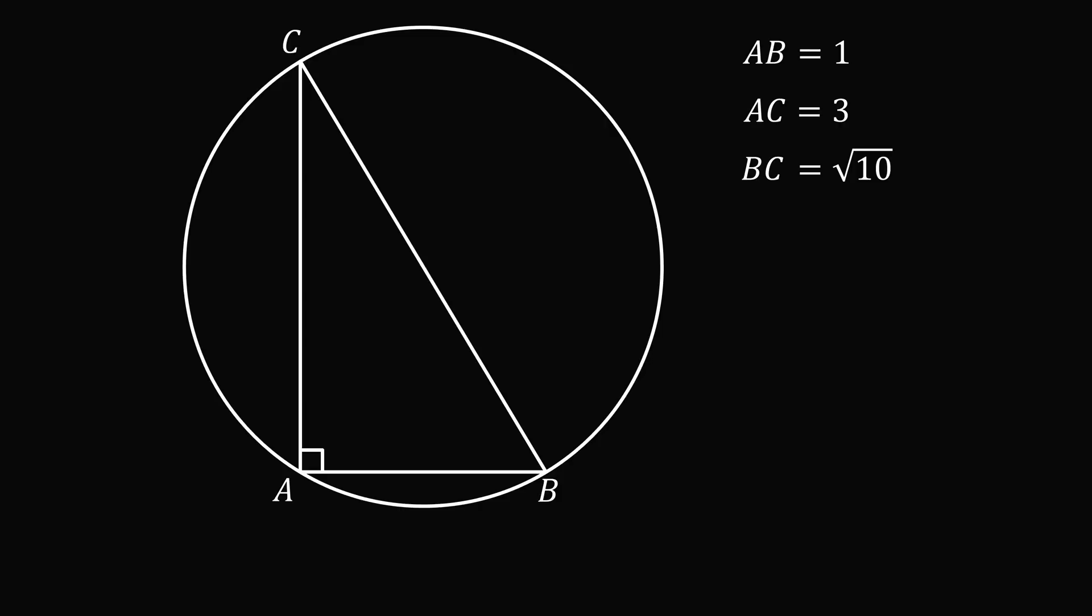So the hypotenuse is the diameter of the circumcircle. So BC is the diameter, which means half of BC will be the radius. So let's construct the midpoint of BC, M, and then CM and MB will both be radii of the circumcircle, and each of them will be equal to 0.5 multiplied by the square root of 10.